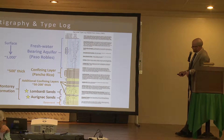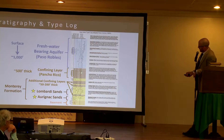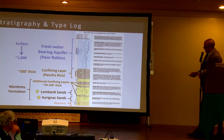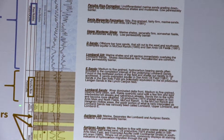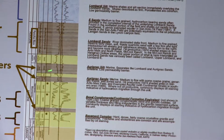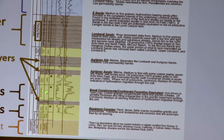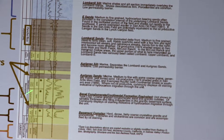Beneath that, we have a low permeability confining layer called the Pancho Rico. This low permeability layer actually acts to impede the vertical migration of fluid upwards or downwards. Beneath that, we have a sequence of sands and other low permeability layers, shown in brown here, until we finally get down into the Lombardia sands, which is the first zone that we want to talk about for this aquifer exemption.